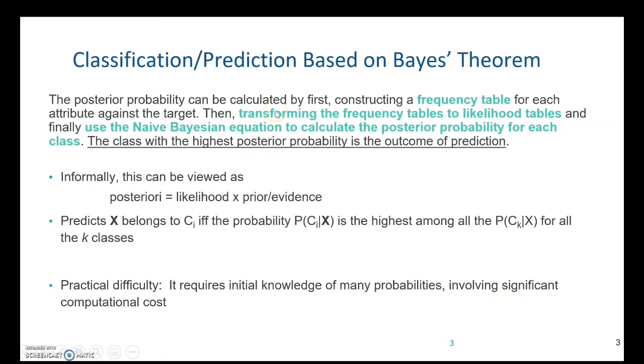The steps can be further described by this. The posterior probability is calculated first. Constructing a frequency table for each attribute against the target. Then, these frequency tables are transformed to likelihood tables.